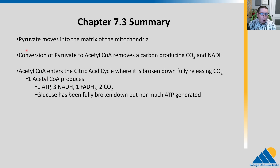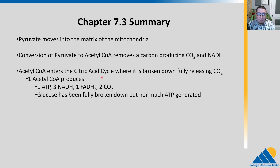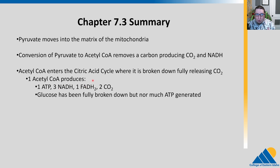In summary: pyruvate moved into the matrix of the mitochondria — in eukaryotes, this is where we start. The conversion of pyruvate to acetyl-CoA removes one carbon, producing CO2 and NADH. Acetyl-CoA then enters the citric acid cycle where it's broken down fully, chopping the remaining two carbons off and releasing them as CO2. One acetyl-CoA produces one ATP, three NADH, one FADH2, and two CO2. Glucose has been fully broken down, but not much ATP has been generated — we got high-energy electron carriers that will be important in the next step, oxidative phosphorylation.